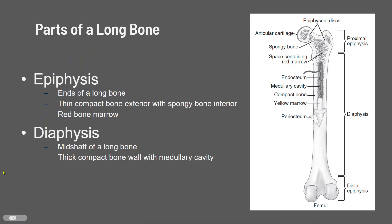You need to know the parts of the long bone. The mid-shaft of the long bone is called the diaphysis, and that's primarily compact or cortical bone. Then you have the epiphyses — your proximal epiphysis and your distal epiphysis — which are made up of cancellous or trabecular bone.